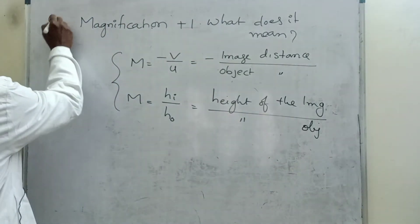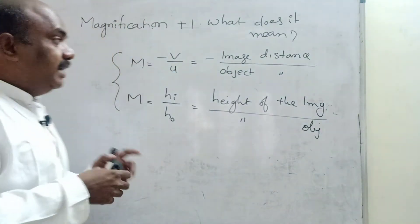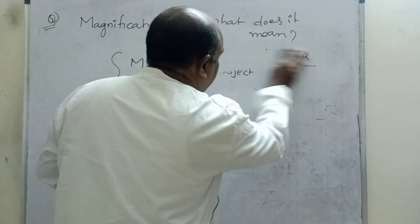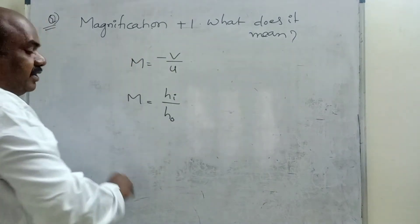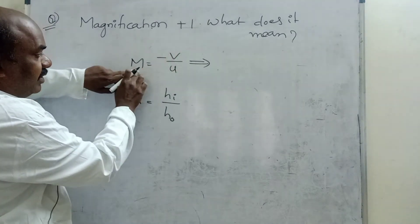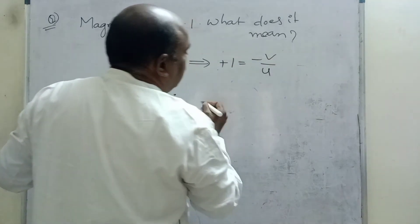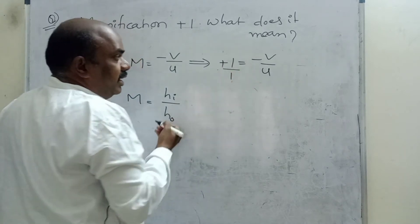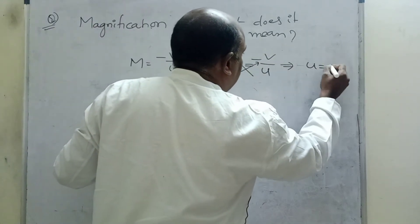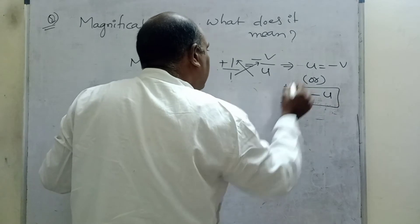Now, come to the question. Today's question: magnification is plus 1 — what does it mean? Using the first formula, placing magnification value: plus 1 is equal to minus V by U. Cross multiply: U is equal to minus V, or V is equal to minus U. Both are the same. U is equal to minus V means V is equal to minus U.